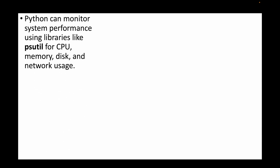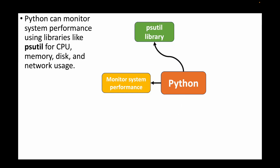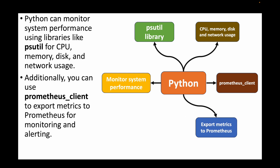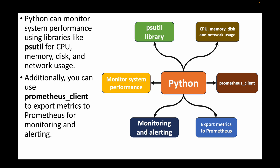The next question is: how can you use Python to monitor system performance? Python provides system performance libraries like psutil, which can be used to monitor CPU, memory, disk, and network usage. Alternatively, we can use third-party tools like the Prometheus client to export metrics from the server to Prometheus for monitoring and alerting. Prometheus acts as the data source, and the data can then be exported to a visualization tool like Grafana to monitor how the system is performing.